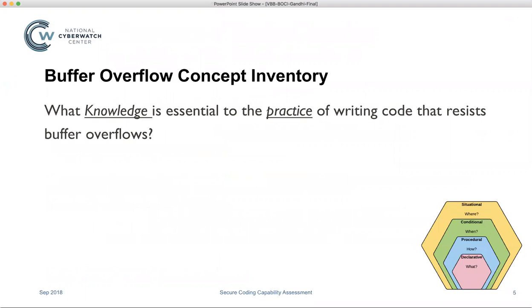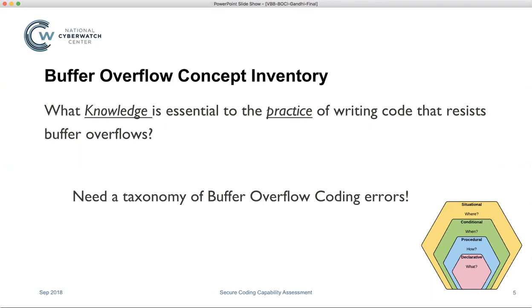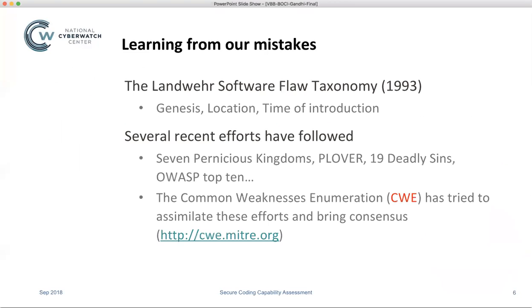That brings us to the question: in the secure coding domain, what knowledge is essential to the practice of writing code that resists buffer overflows? If you ask any employer, this is the kind of competency they would love to see in their programmers. How do we assess that somebody possesses this knowledge? Forget about getting skilled in something — we have to first ask: do they even have the requisite knowledge to be skilled in this task? In order to build a concept inventory, we first need to know what is the generally accepted conceptual knowledge in this field with respect to buffer overflows. So we need a taxonomy — a network of conceptual knowledge in this area from which we can build a CI.